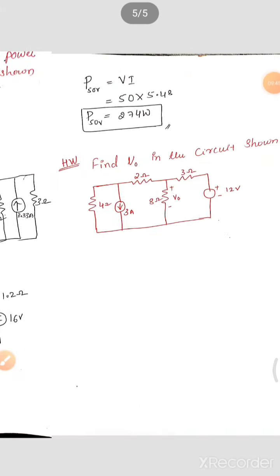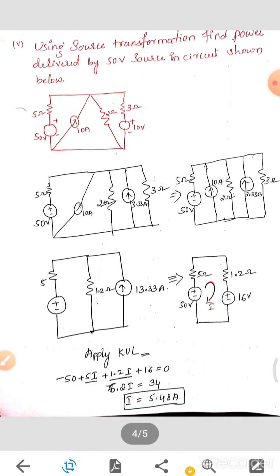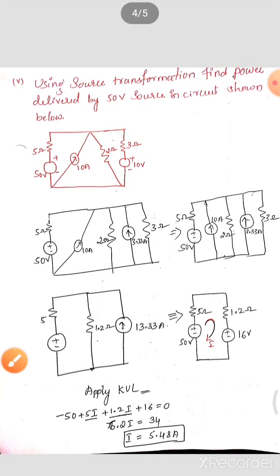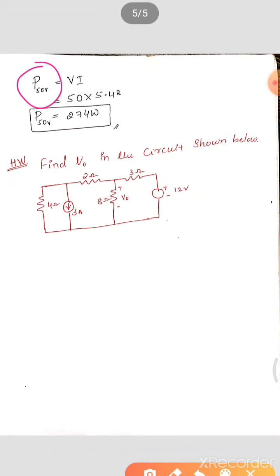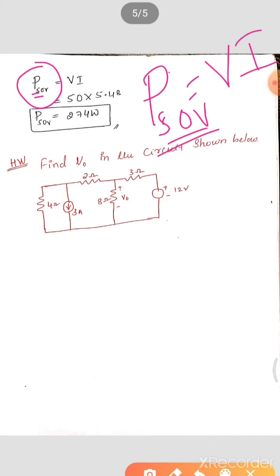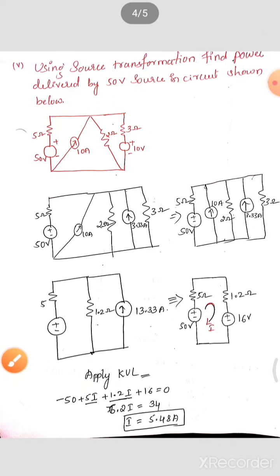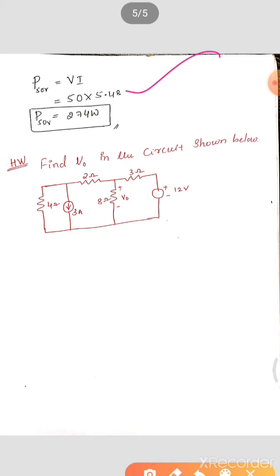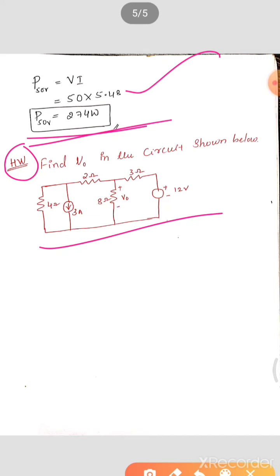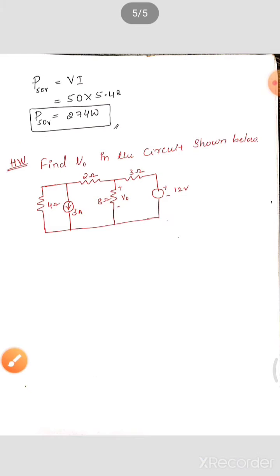Now we will deal with this next numerical. This is between terminals A and B — always keep track of the terminals. All the lines shown are wires, flexible wires — imagine them that way. Between A and B, there is a practical voltage source and along with this, a current source is in parallel. What we can do is get a single source — either a current source or a voltage source. How many sources are there now? There are two: one is a voltage source.